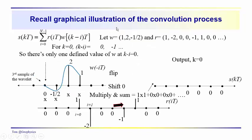Remember, from the graphical illustration that we went through last time, we're working with this equation over here. Effectively, what this equation does is it runs reflectivity forward in time from zero to the total length of the trace. But it runs the wavelet backwards in time from a particular sample in the signal, looking backwards through this period of time. So again, this is our wavelet, this is our reflectivity sequence for k equal to zero. Remember, we get values of k minus i, which are equal to zero, minus one, minus two, and so on.